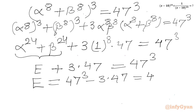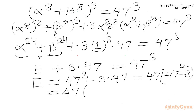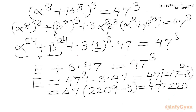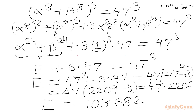Therefore E = 47^3 - 3 × 47 = 47(47² - 3) = 47(2209 - 3) = 47 × 2206. Multiplying these two numbers, our answer comes out to 103,682.